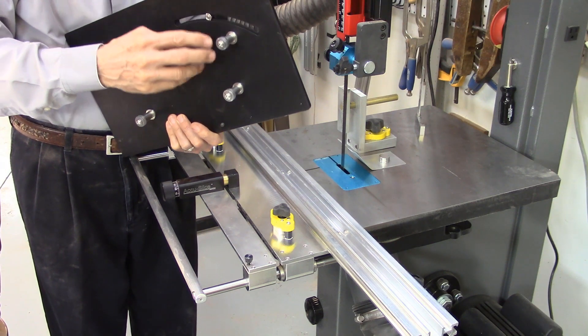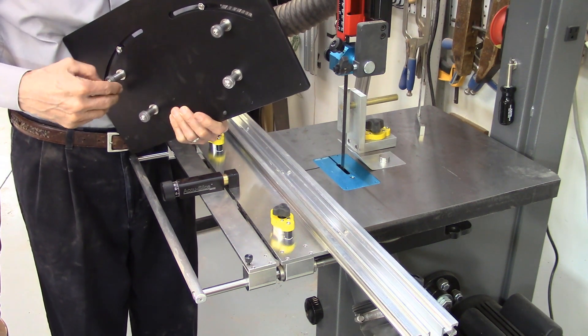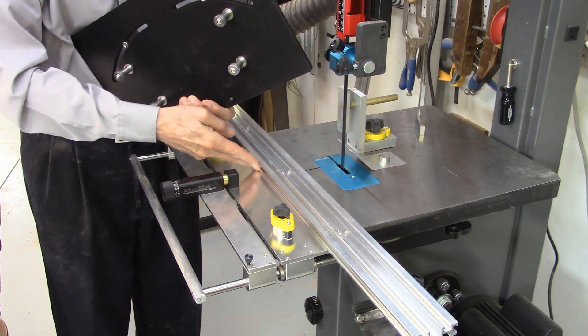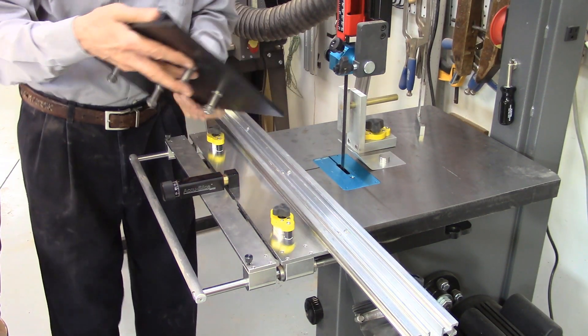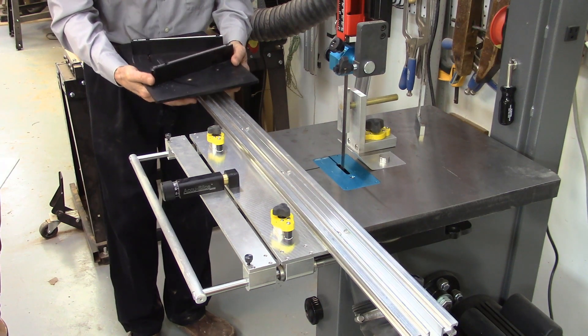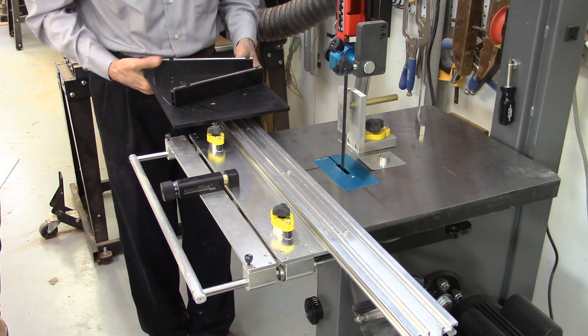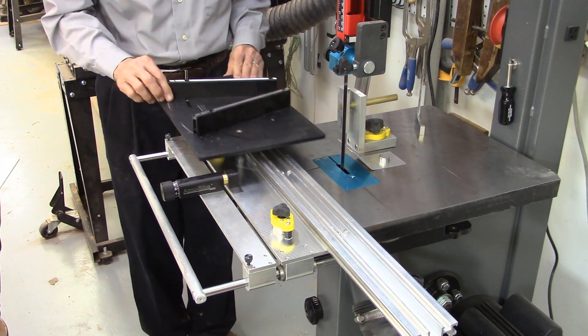The AccuEdge has four roller bearings on its base, and each roller bearing slides on the rail on the AccuSlice system. That's what gives you your smooth, even cuts. So you begin by, first of all, sliding those four bearings into the groove on the edges of the rail on the AccuSlice system.